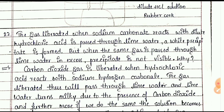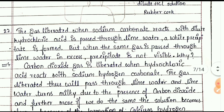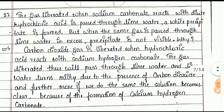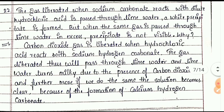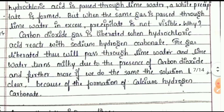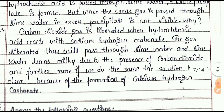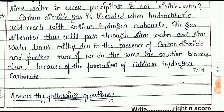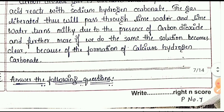The next two-mark question: the gas liberated when sodium carbonate reacts with dilute hydrochloric acid is passed through lime water, a white precipitate is formed. But when the same gas is passed through lime water in excess, the precipitate disappears. Observe the answer and practice it.